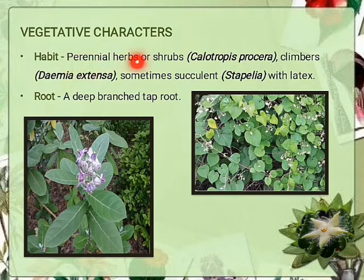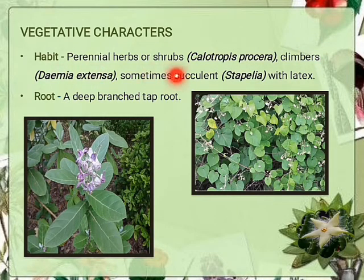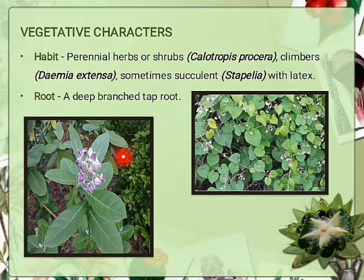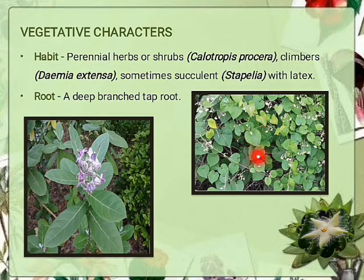Habit: perennial herb or shrubs, for example Calotropis procera. Climbers, for example Demia extensa. Sometime succulent — that means plants having thick fleshy leaf or stem adapted to storing water, for example Stapelia. Latex is present. Root system is a deep branched taproot system. The first image shows the Calotropis procera plant, which is a shrub, and the second image shows Demia extensa, which is a climber.